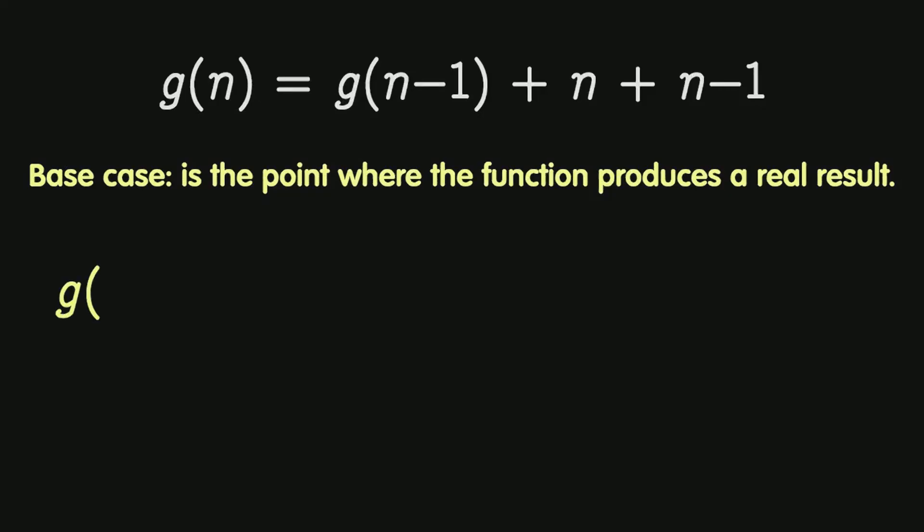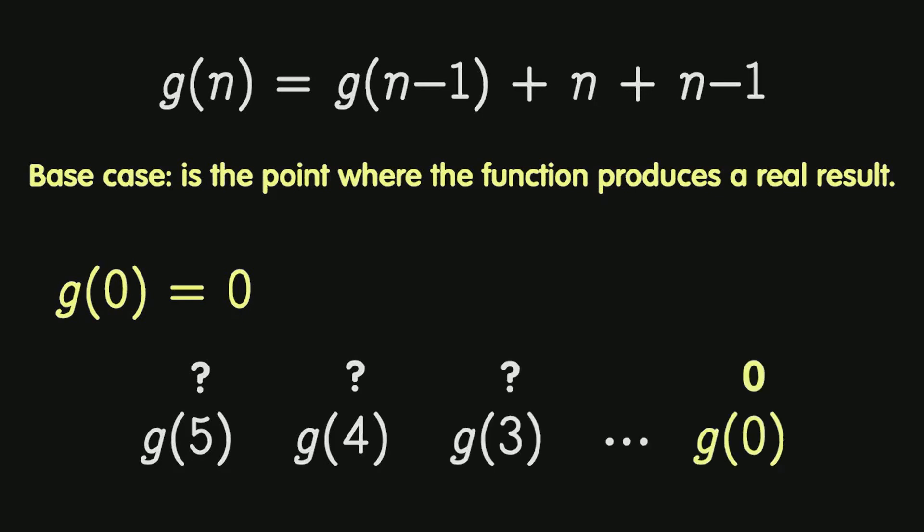For example, g of 0 is equal to 0. This is an assumption, because we may not know what g of 5 is, or g of 4, or g of 3. But we know that g of 0 is 0, and based on that assumption, we are going to be able to solve the function at any point.